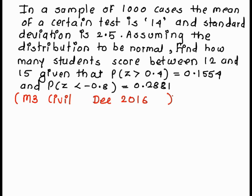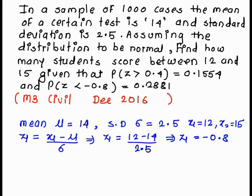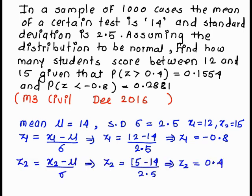The mean is 14 and the standard deviation is 2.5. The value of x1 equals 12 and x2 equals 15. Now we calculate z1, which is x1 minus mu upon sigma. z1 equals 12 minus 14 by 2.5, so we get z1 equals minus 0.8. Similarly we get z2 equals 0.4.